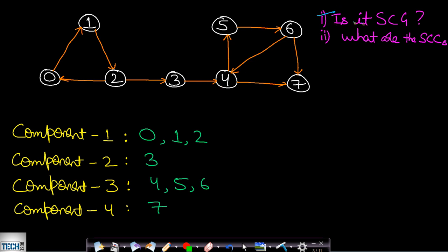Let us now take a bigger example. We will try to find whether this given graph is strongly connected, and if not, what are its strongly connected components. Starting from node 0 we can reach nodes 1, 2, 3, 4, 5, 6, and 7. The same holds for nodes 1 and 2. But starting from node 3, there is no path to node 2, so this entire graph is not a strongly connected graph.